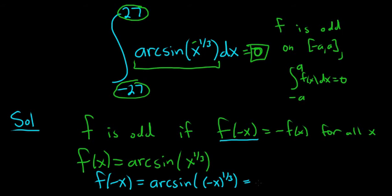And then, that's an odd power there, right? So you can write that as arc sine of negative x to the one-third, right? X to the one-third is actually an odd function, right? That's why you can do that.